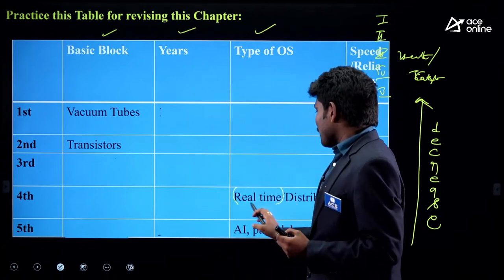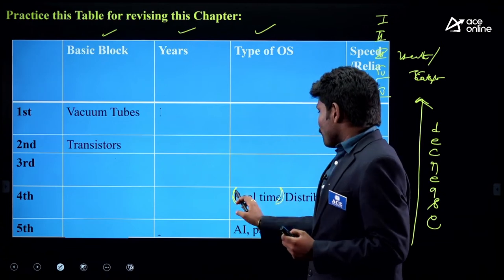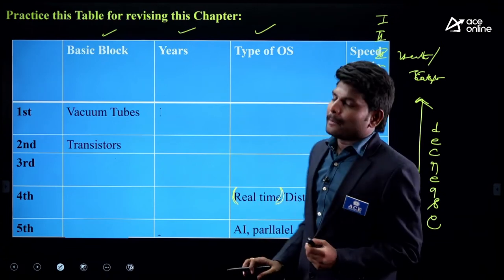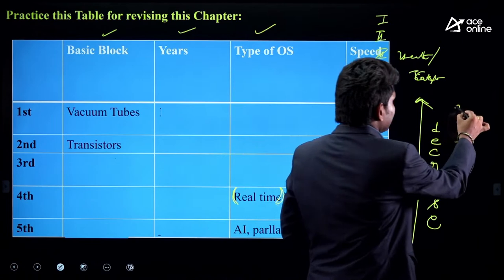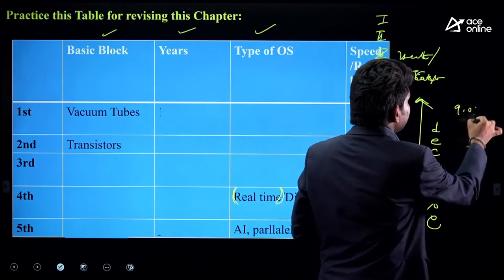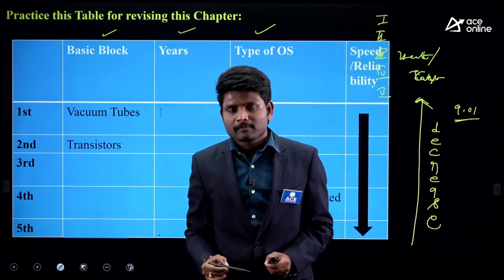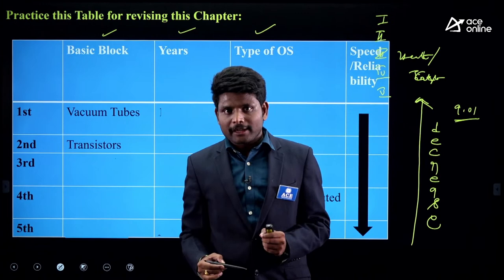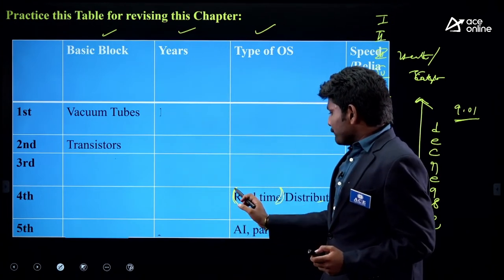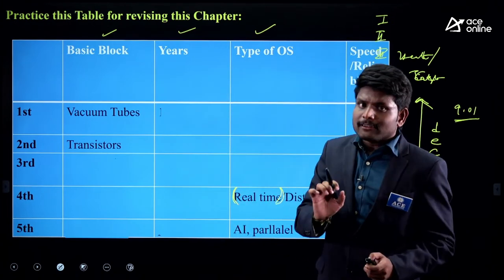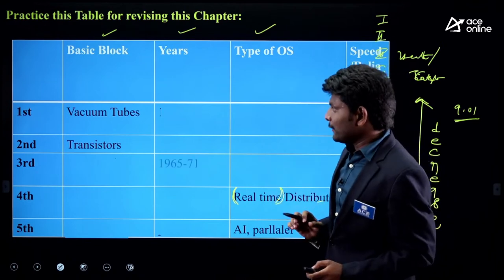Real-time means a very strict deadline — the computer cannot delay any process. Then: 'When were the third generation computers active?' The years active: 1965 to 1971, the third generation computers were in use.